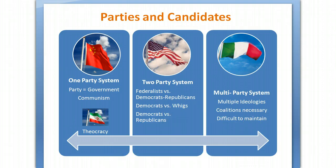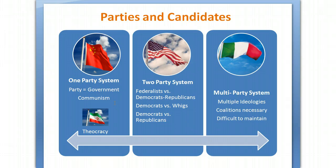There are three different party systems I want to talk about today. The first is the one-party system, which is the same as communism. A one-party system is where the party is the same thing as the government. Occasionally one-party systems are religious-based — those are theocracies — but for the most part, think of a one-party system as communist, such as China, Vietnam, Cuba, and North Korea.